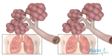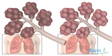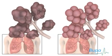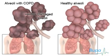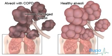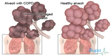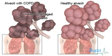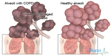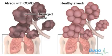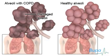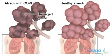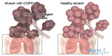Emphysema damages the alveoli and the walls break down. The effects of COPD mean less oxygen passes into the blood, leading to breathing difficulties, wheezing, and coughing.